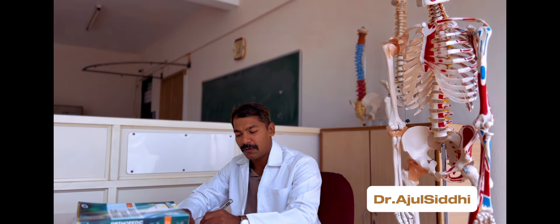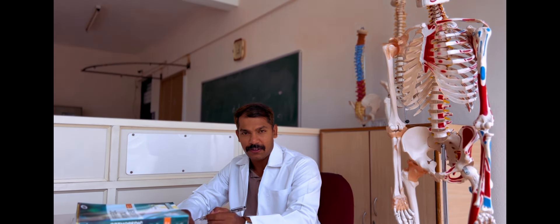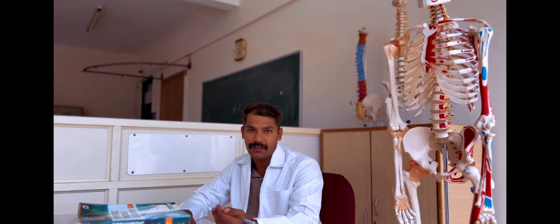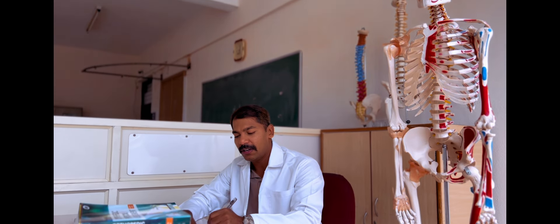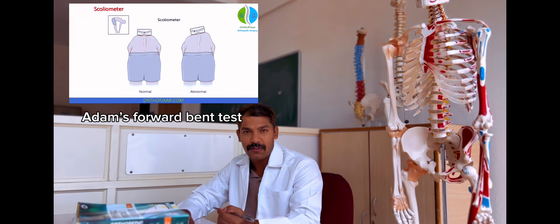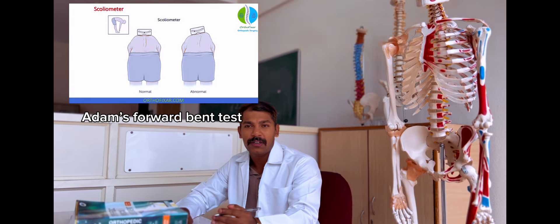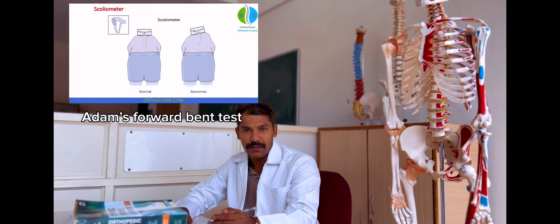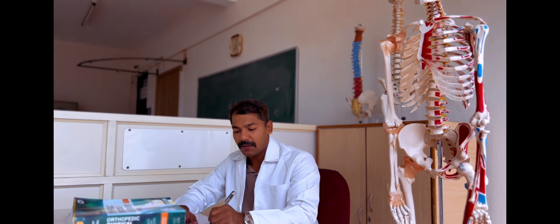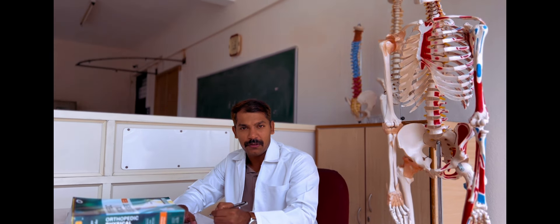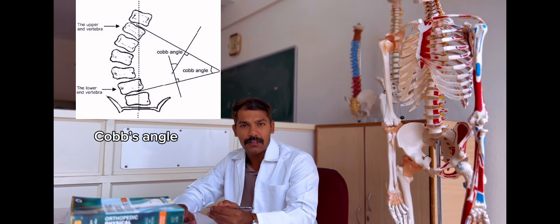Diagnosis of scoliosis can be done by physical observation, where lateral curvature of the spine is visible. We can also perform a physical examination called Adam's Forward Bend Test, where the patient is asked to bend forward and shoulder alignment and symmetry are checked. Another method is the Cobb's angle measurement, used to assess the severity of scoliosis.